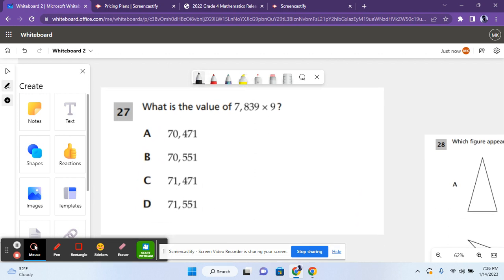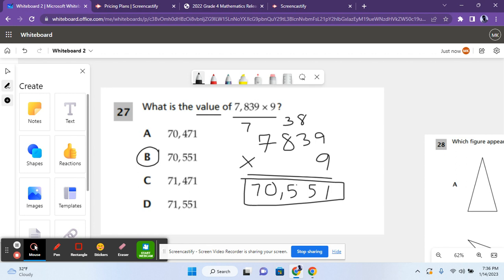So for number 27 it says what is the value of 7,839 times 9? Here you have to multiply 7,839 times 9. Nine times nine is equal to 81. You put a one down here and you carry the eight. Three times nine is 27. 27 plus 8, that's equal to 35. You put the 5 down and you carry the 3. Eight times nine is 72. 72 plus 3 is 75. You put a 5 down here and carry the 7. Seven times nine is 63. 63 plus 7 is 70. So you are left with the answer 70,551 which is answer choice B. Let's move on to the next problem.